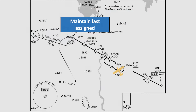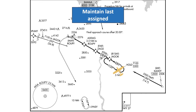You have to maintain your last assigned altitude. You're being radar vectored, which means you're not on a published segment of the approach, such as the leg from CADDY to JAGOK. There's no published altitude for where we are on this plate, so the controller issuing the vector and the approach clearance will give us an altitude. This is made clear in our approach clearance because the controller is required to say something to the effect of 'maintain 7000 until established' when issuing the clearance.